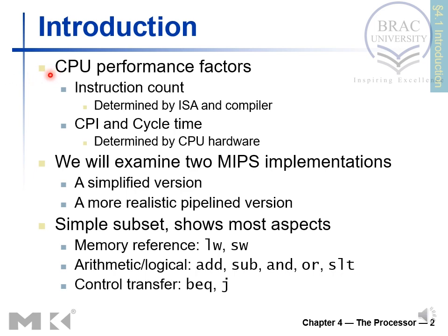For CPU performance factors, the first is instruction count — as the number of instructions increases, it takes more time to execute the entire program. Instruction count is determined by the instruction set architecture and the compiler. CPI and cycle time are determined by the CPU hardware. We'll examine two MIPS implementations: a simplified version and a more realistic pipeline version.